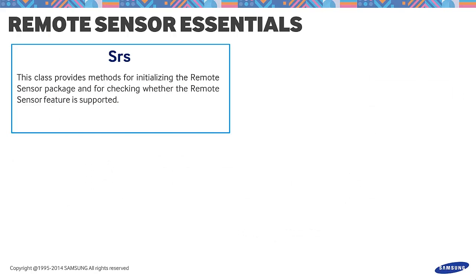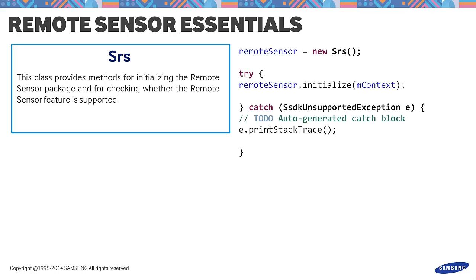Let's proceed with the classes. First, the SRS class. This class provides methods for initializing the Remote Sensor package and for checking if Remote Sensor is supported. It has four methods: GetVersionCode, GetVersionName, Initialize, and IsFeatureEnabled. For IsFeatureEnabled, we have Type GearManager, a constant used to check whether GearManager is supported; Type GearFitManager, a constant to check whether GearFitManager is supported; and lastly, Type RemoteSensorService, a constant to check whether RemoteSensorService is supported.